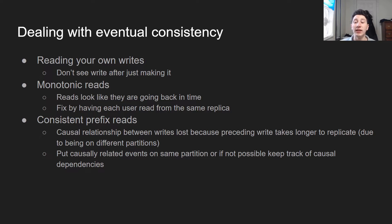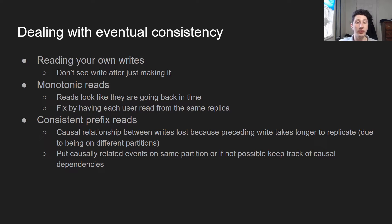Finally, you have consistent prefix reads. This is when there's a causal relationship between two writes — the second write only makes sense after the first one happens — and this occurs because those writes are on different partitions. One write from one partition gets replicated sooner than a write from the other partition, creating a race condition where you only see the effect of the causal write but not the causal write itself. You can solve this by putting causally related events on the same partition, or by keeping track of causal dependencies — giving each write an ID for the previous write that caused it.